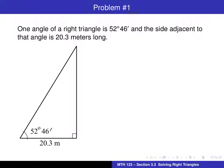Here's our first problem. We're given a certain angle, 52 degrees 46 minutes, and the side adjacent to it is 20.3 meters. One of the slight difficulties with this one is the angle being measured in degrees and minutes. What I would do with that is just convert that to what I would refer to as decimal degrees.